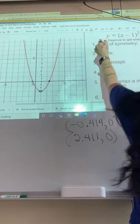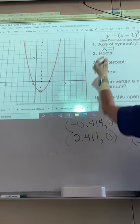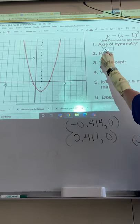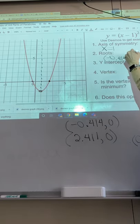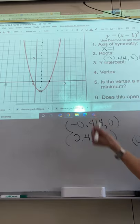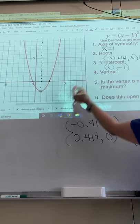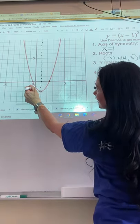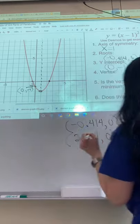Okay, so we found axis of symmetry, we already put that but I erased it. x equals one. And then the roots I got from Desmos. The roots are negative 0.414 comma zero and 2.414 comma zero. The y-intercept was at zero, negative one, which actually I can tell. So there's the y-intercept right there, which is at zero, negative one.